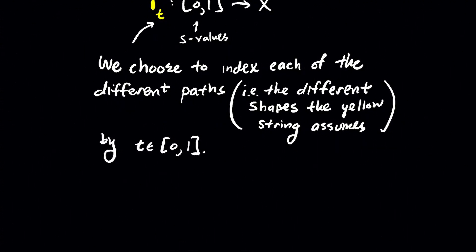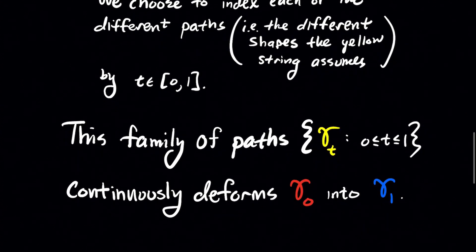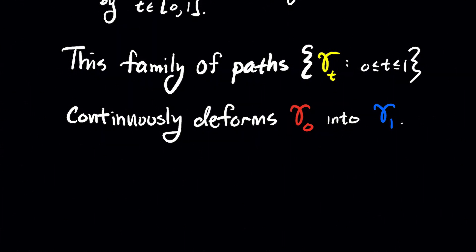In other words the different shapes that the yellow string assumes, we're going to index it by a number T. And T is also going to be a number between 0 and 1. Now this defines a family of paths, so a set of paths we'll call gamma T. And what does this family do? It continuously deforms gamma 0 into gamma 1.